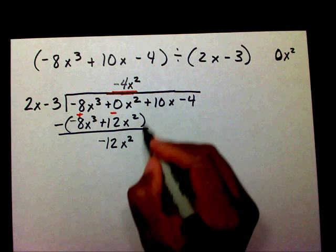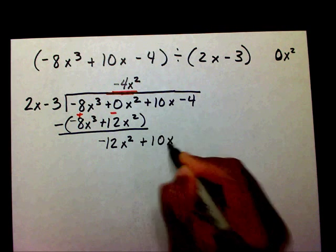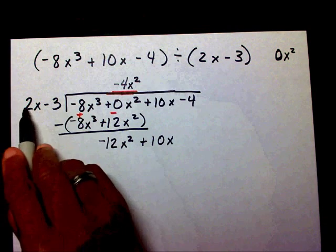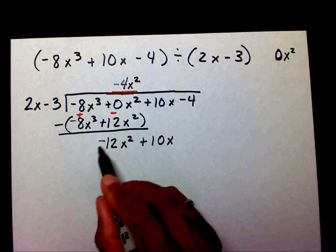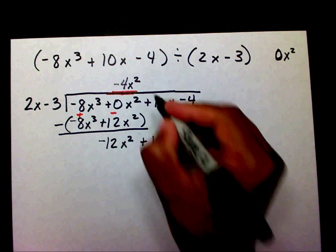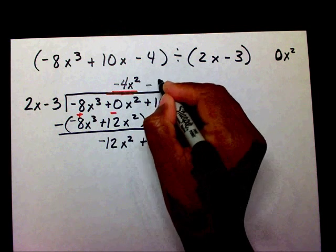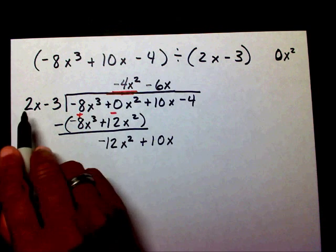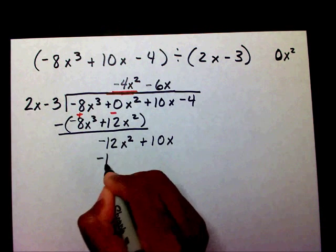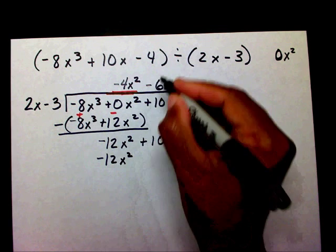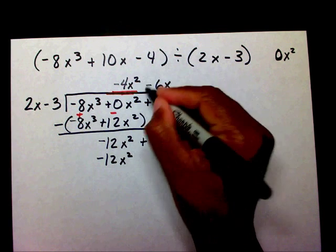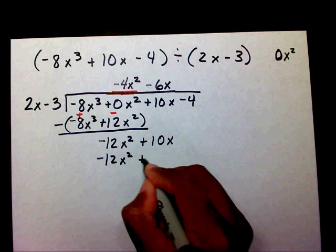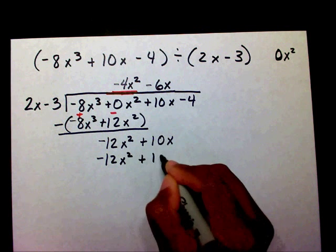Bring down my plus 10x. What number times 2x will give me negative 12x squared? Well, that's negative 6x. Negative 6x times 2x is negative 12x squared. Negative 6x times negative 3 is a positive 18x.